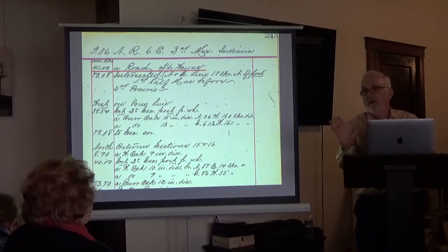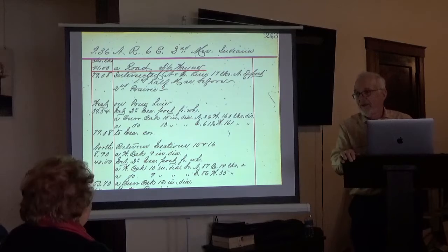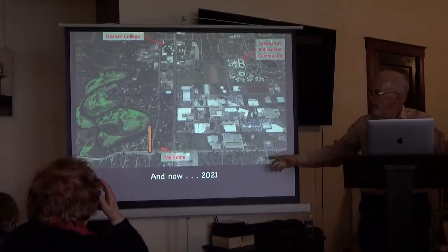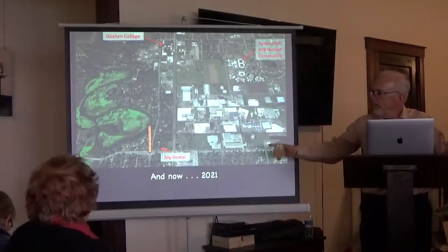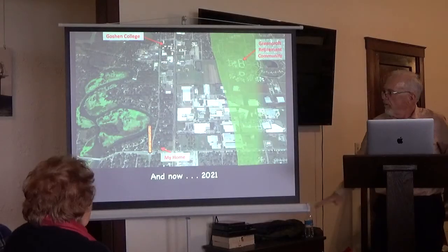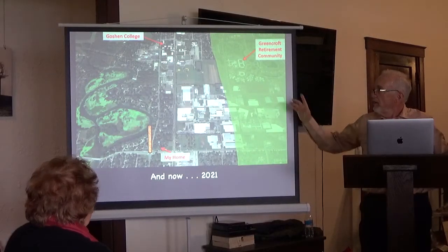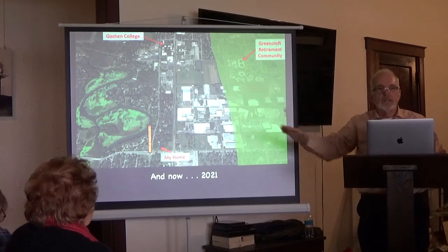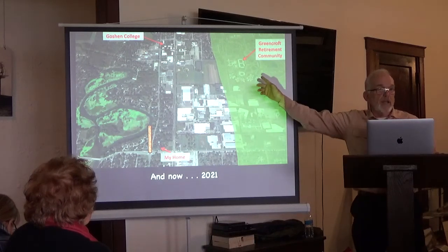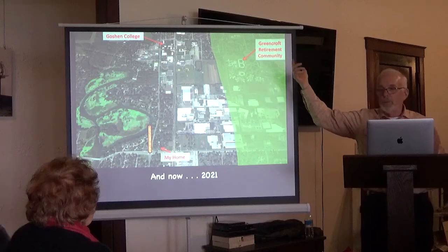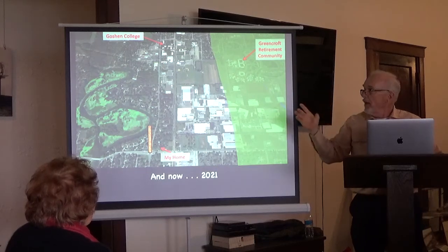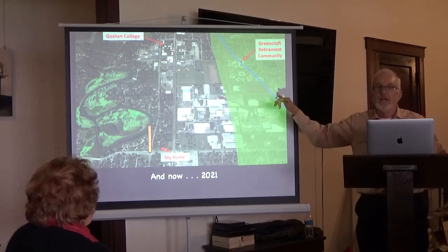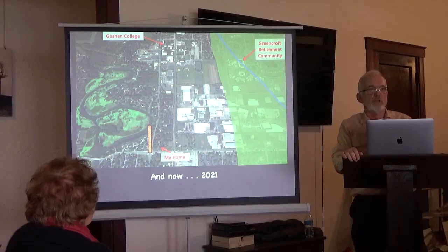Coming back to this map of where we live, this area is all prairie. This is a major retirement center that's all inside the prairie — when I talked on that campus, people said 'oh, it goes right through my building.' This blue line is the trail system running across. Let me step back and say how I got interested in this.